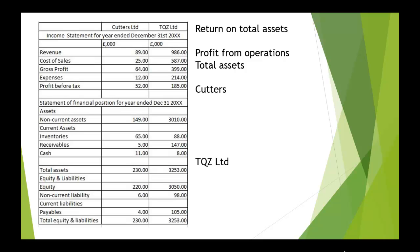So, we have our two companies and their financial statements. For Cutters, the return on total assets is 52 times 100 over 230, which comes to 22.6%. And for TQZ Limited, 185 times 100 divided by 3,253 comes to 5.6%. You can see there's quite a considerable difference in those two figures.